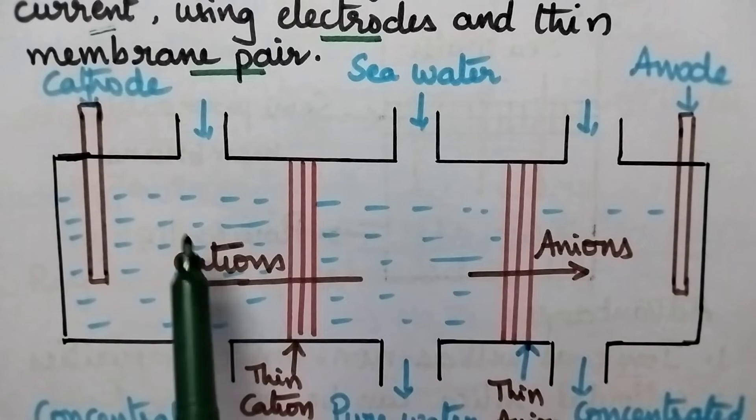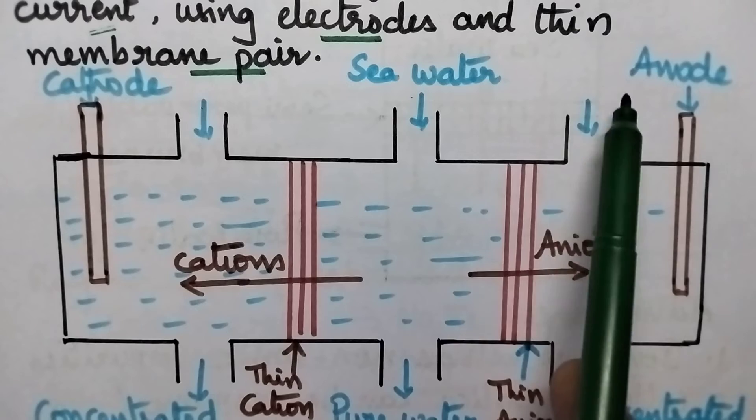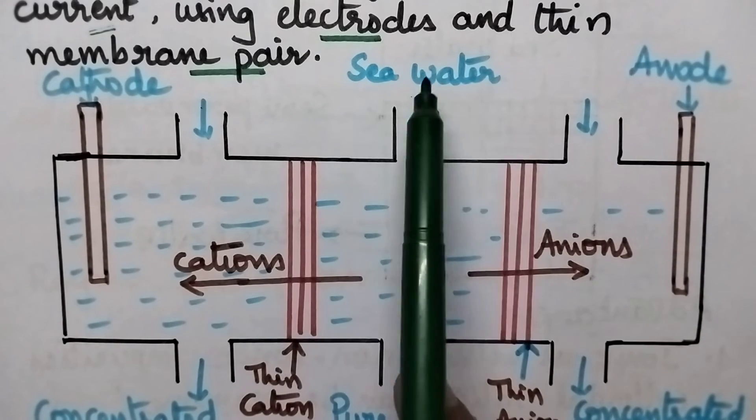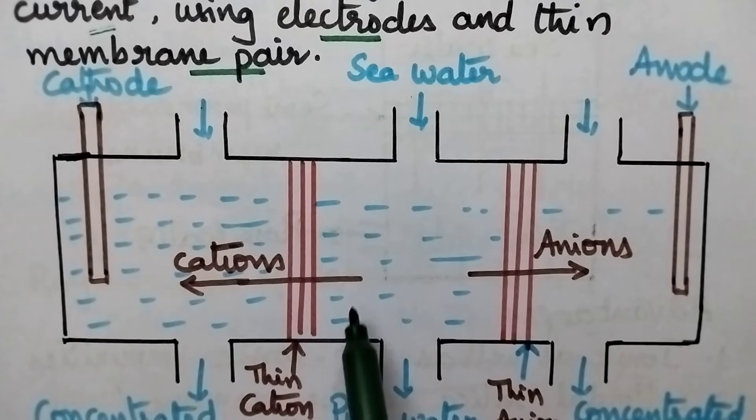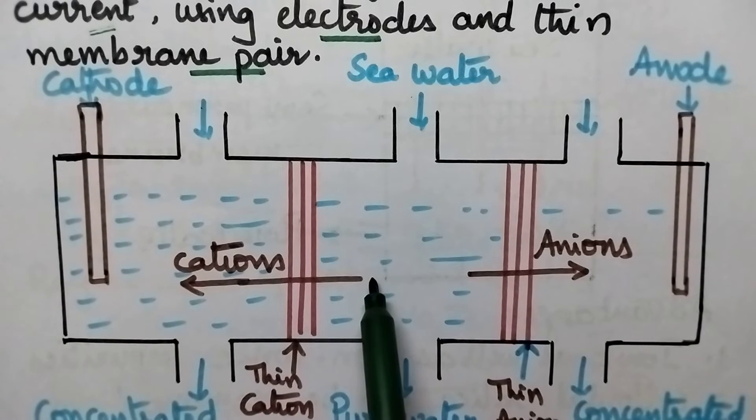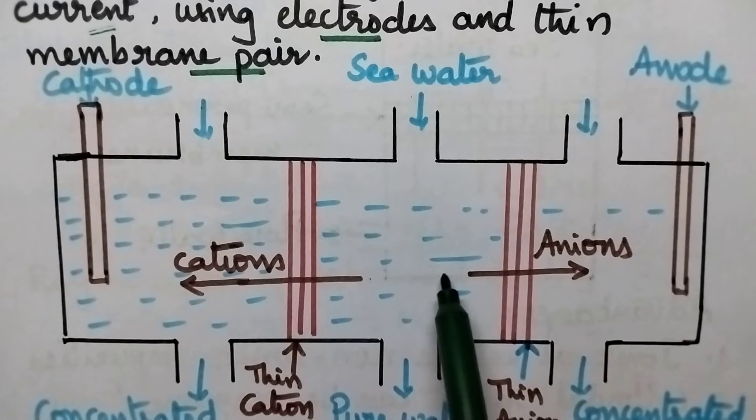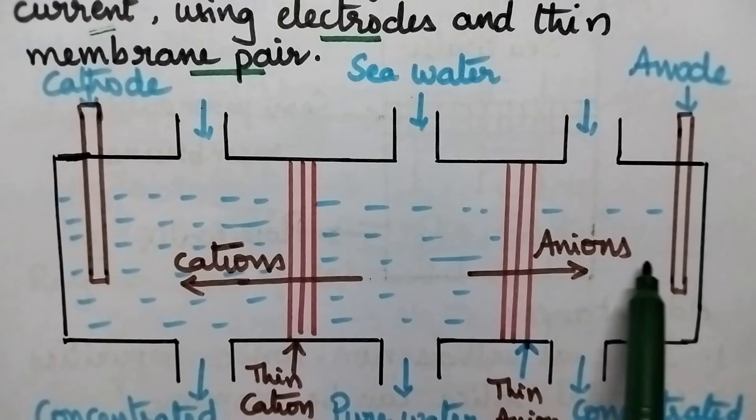Each compartment is provided with inlet and outlet. When sea water is passed through the 3 compartments and the electrodes are connected to the battery, electric current flows. As a result, the cations from the middle compartment will move towards the cathode and the anions from the middle compartment will pass towards the anode.